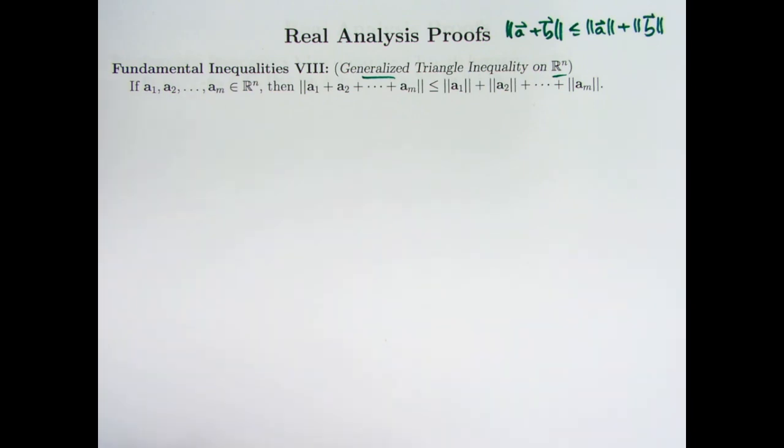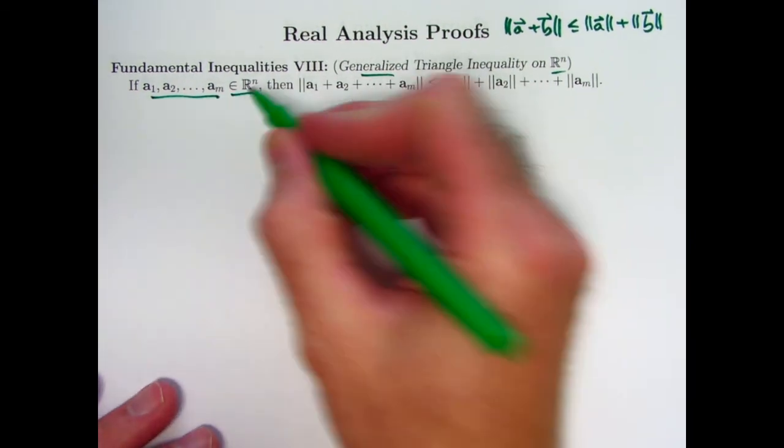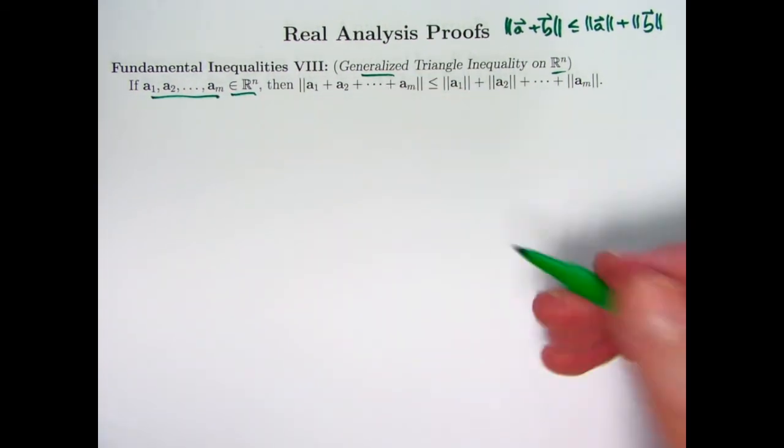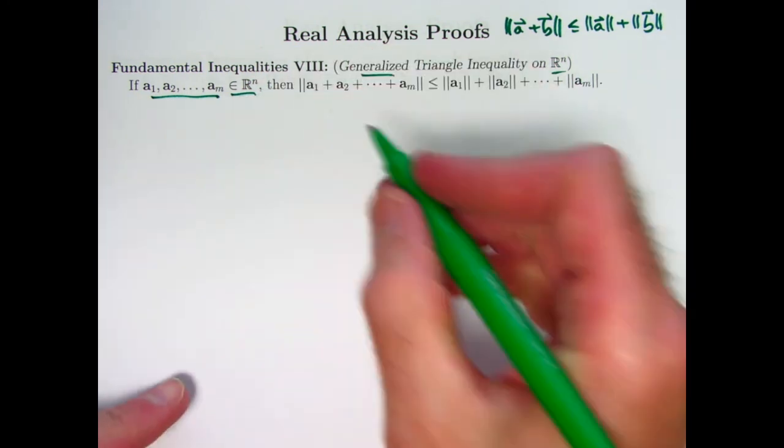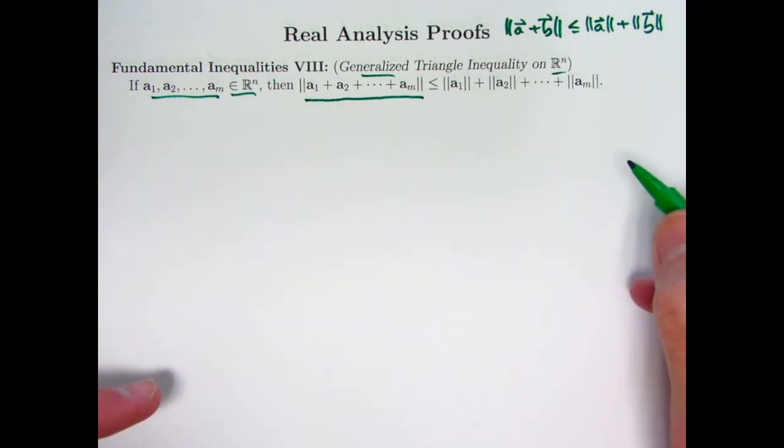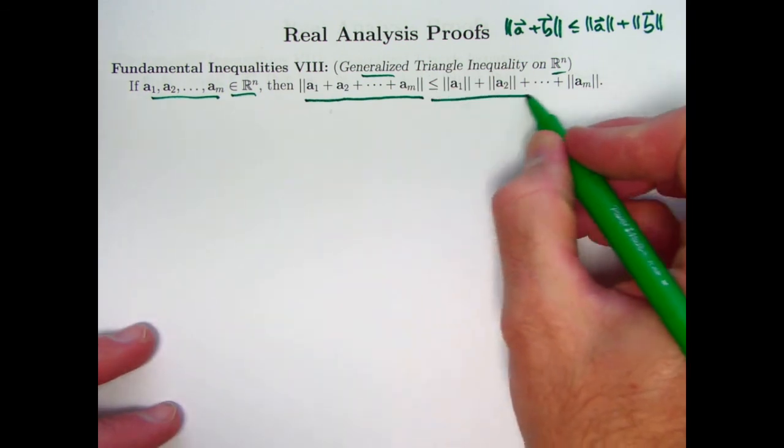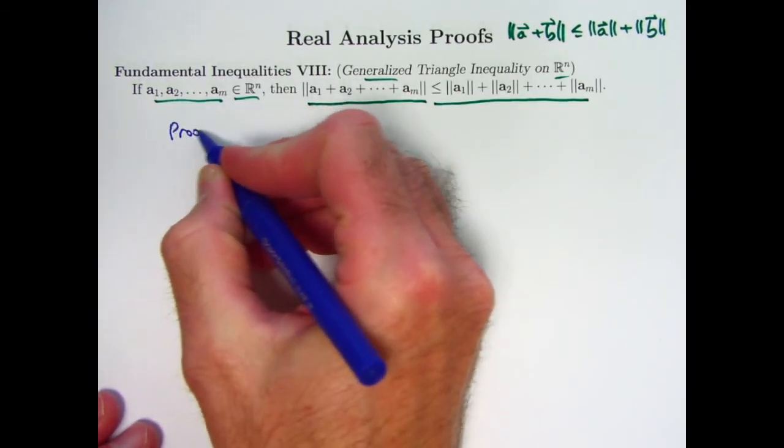And what does that mean here? Well, we're going to use induction, mathematical induction, to verify that if we have m vectors in Rn, so n is some positive integer, m is possibly some other positive integer. Then you've got that the magnitude of the sum a₁ plus a₂ plus dot dot dot plus aₘ is less than or equal to the sum of the magnitudes of the individual vectors. So it's an induction proof, as you might guess. And it's fairly easy, so this should be fairly short. Let's go ahead and look at the proof right away.